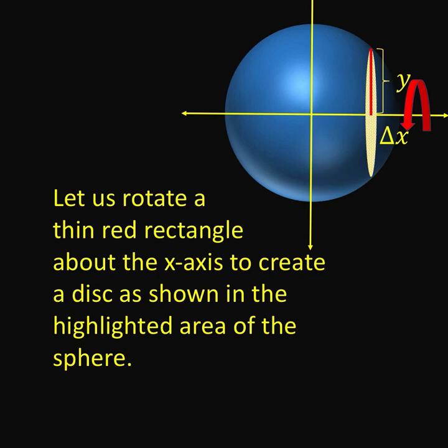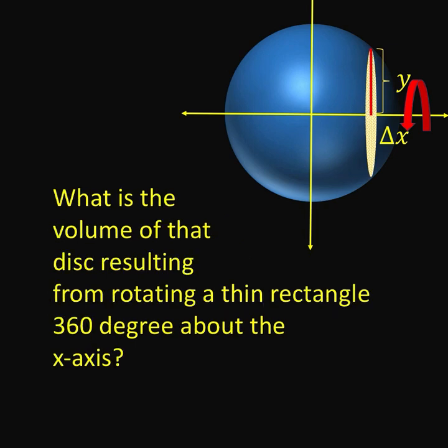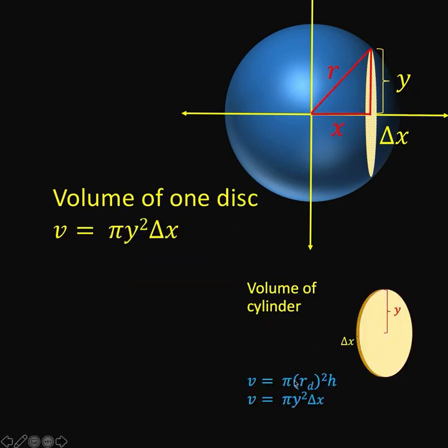Now let's go back to our sphere that we sliced at the beginning. Let's begin with this red rectangle that is perpendicular to the x axis. And then let's rotate this rectangle 360 degrees around the x axis in order to form this disk. What is the volume of the disk resulting from this rotation?